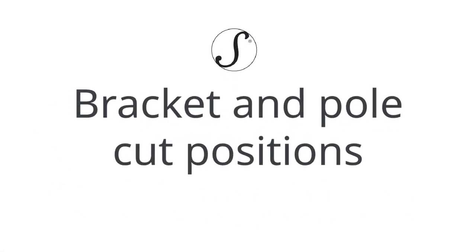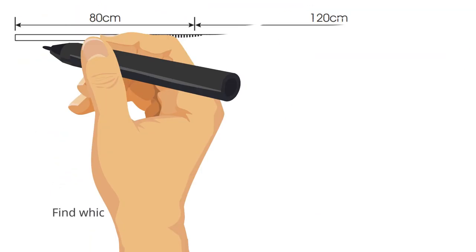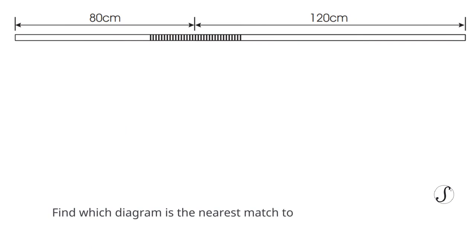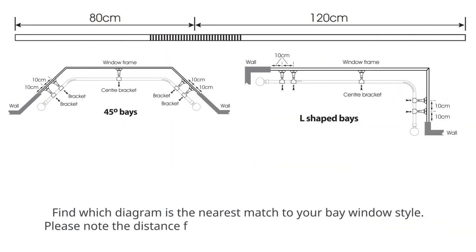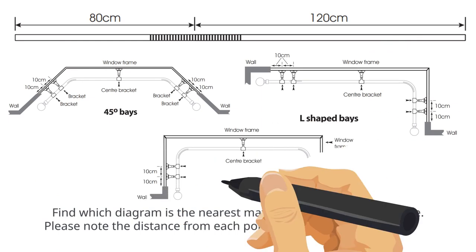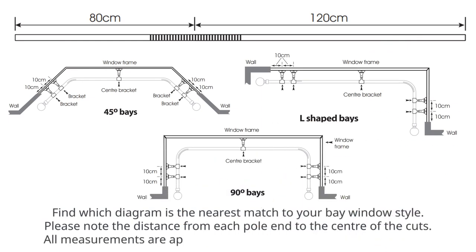Bracket and pole cut positions. Find which diagram is the nearest match to your bay window style. Please note the distance from each pole end to the center of the cuts. All measurements are approximate. The finial position is a guide only.